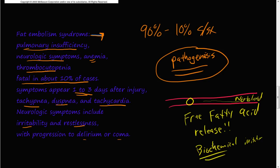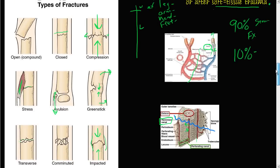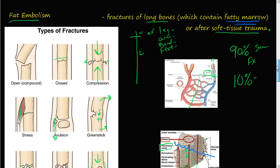This free fatty acid release causes irritation around the endothelium, and combined with the mechanical obstruction, leads to platelet aggregation, platelet recruitment, and coagulation and inflammation processes occurring simultaneously. That is fat embolism in a nutshell — it mostly happens because you have fractured a long bone or had significant soft tissue trauma. We'll see you in the next video.